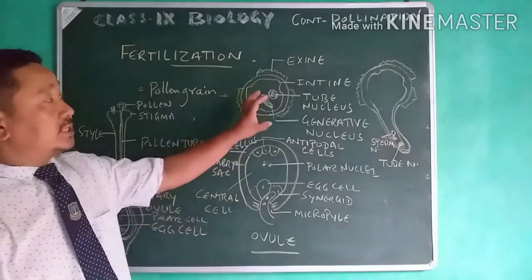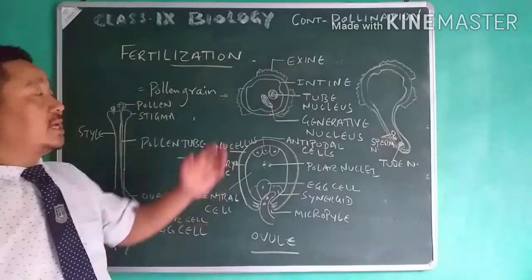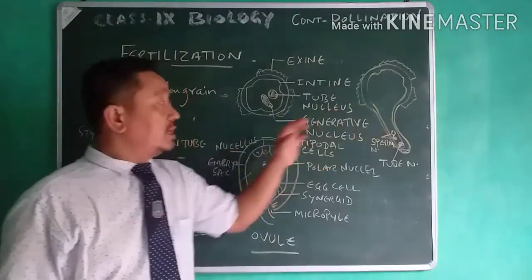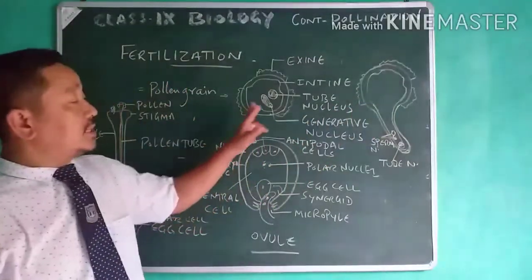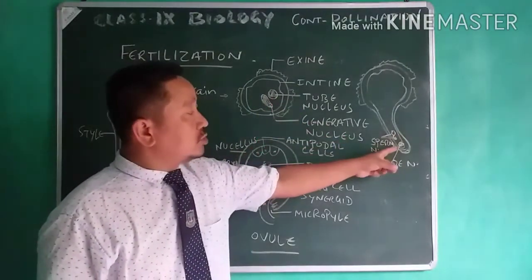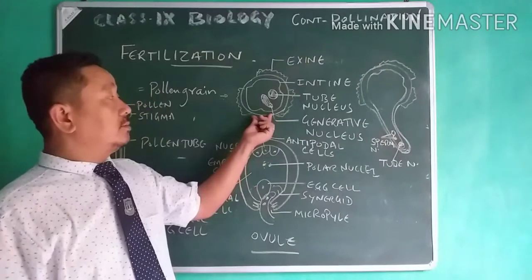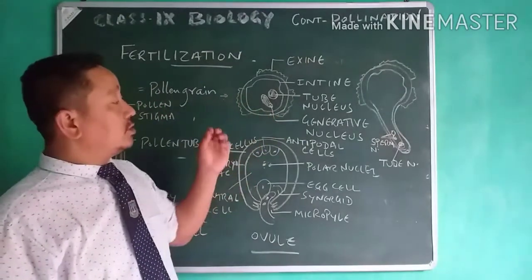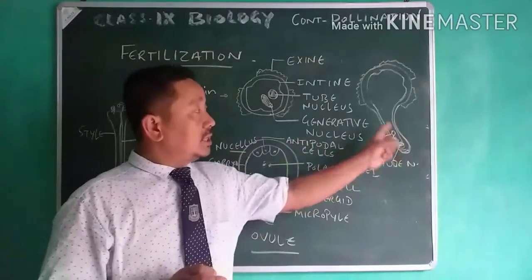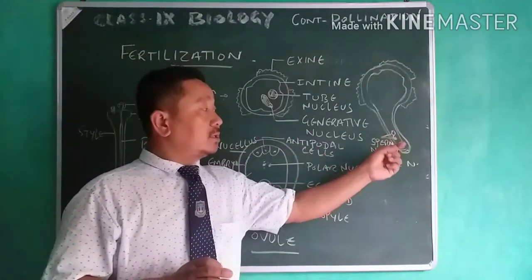After pollination, when the pollen grain is transferred to the stigma, development takes place. The tube nucleus causes a tube to be developed and elongated from one of the regions — a pollen tube is formed like this.